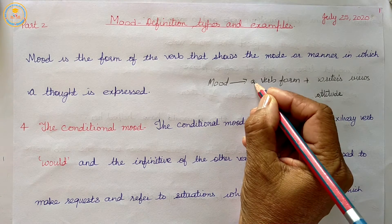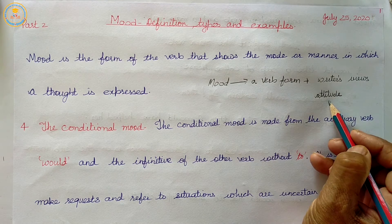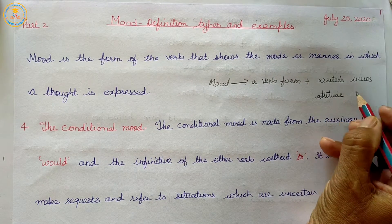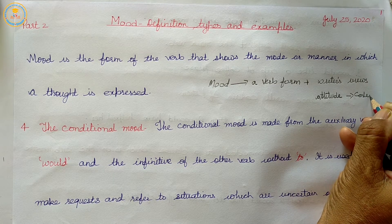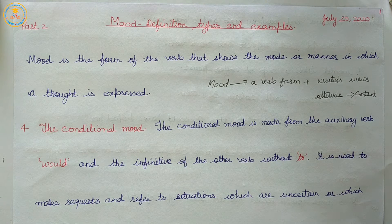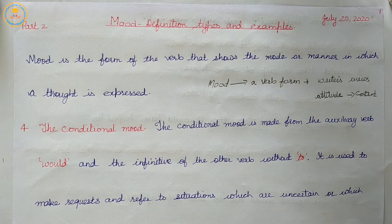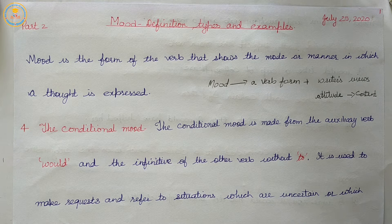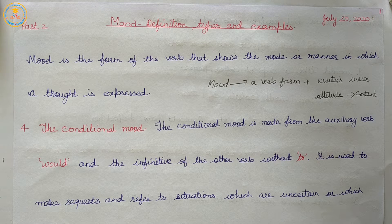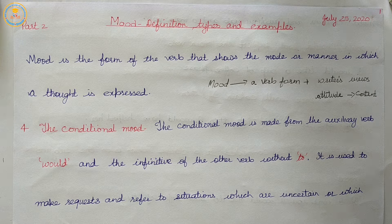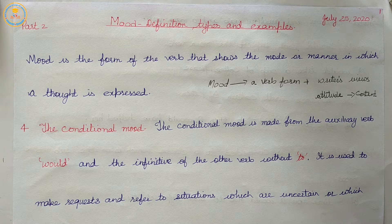Mood is a verb form that shows the writer's attitude towards the content of his or her words. It is an expression — it is a way of expressing a statement with the help of verb form. In the previous topic we discussed three moods; in this class we will discuss another two. The tense of a verb indicates when an action occurred, but each verb has a mood that tells us how the action is viewed or perceived by the speaker.